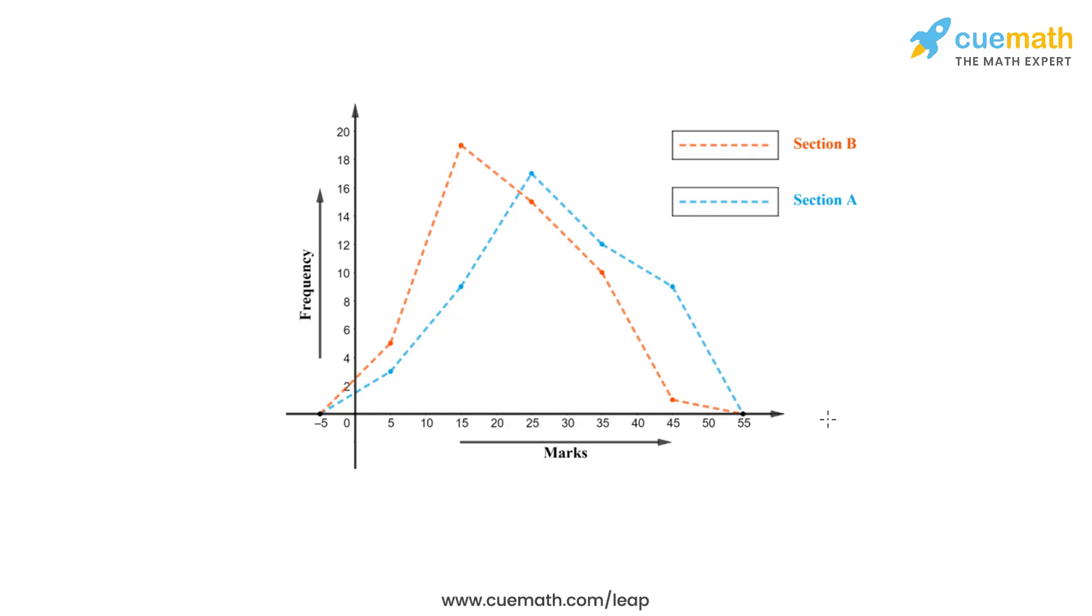We can see that we have drawn two frequency polygons for Section A and Section B. The frequency polygon for Section A is drawn by blue dotted lines, and for Section B it is drawn by orange dotted lines. We have drawn the frequency polygon by taking the class marks on the x-axis and taking frequency on the y-axis. The scale that we have chosen for the y-axis is one unit to be equal to two students, and that is because the value of the least frequency was observed as 1, while the highest was 19.